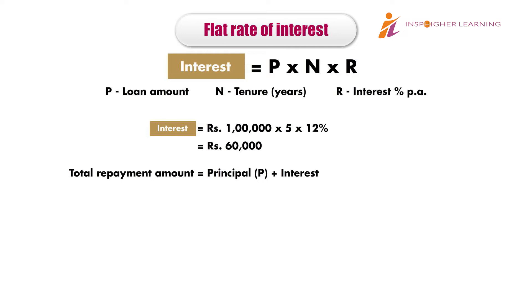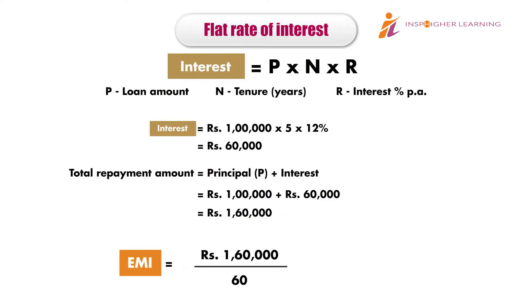The borrower has to pay not just the interest but also the loan principal. Thus, the total repayment would be 1,60,000 rupees. They are repaying this over 5 years in 60 monthly installments. Therefore, the EMI in this case would be 1,60,000 divided by 60 months, which equals 2,667 rupees.